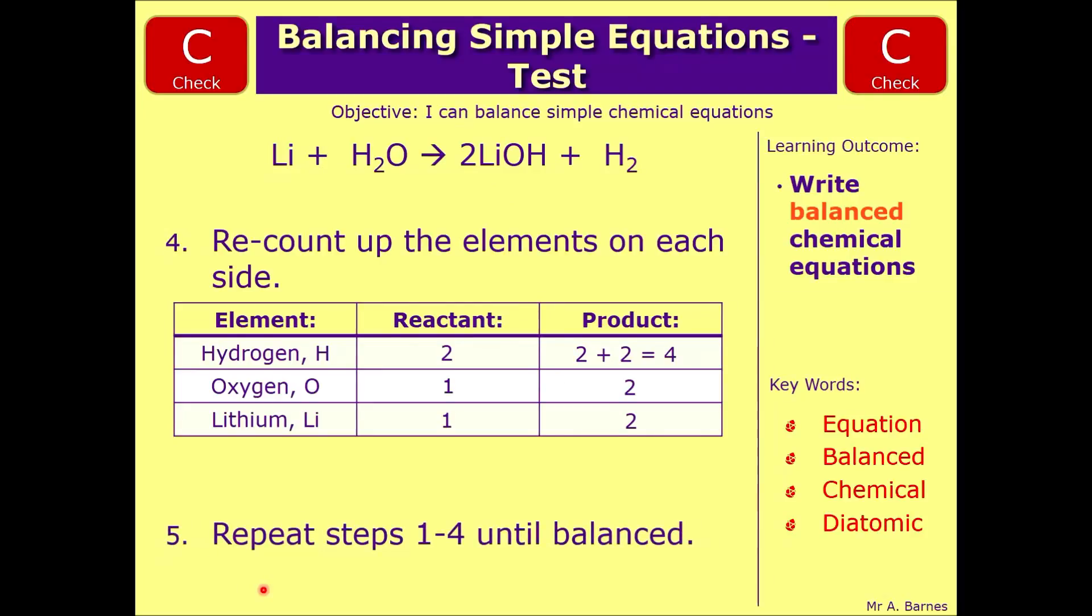The next step is to repeat steps one to four until it's completely balanced. So to do that we start by looking at the left hand side and usually again go with the compound, so let's put a two in front of H2O. That now gives me two times two which is four hydrogens and will actually also give me two times my oxygen, so two times one which gives me two. So from doing this both my hydrogen and my oxygen are balanced. This leaves me just with lithium. I've got one, need two, so one times two gives me two.